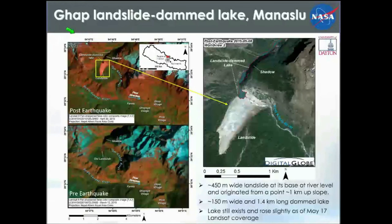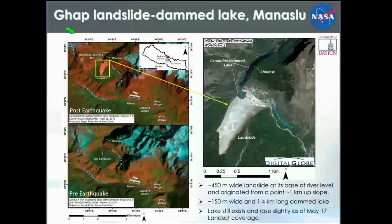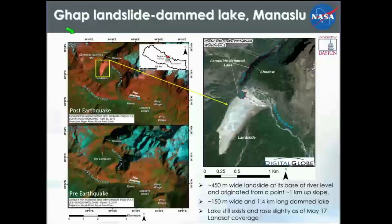Another example is the Gop landslide that dammed a lake in Nepal. On the right, a WorldView image shows the dammed lake and the major landslide in white. The pre- and post-images on the left reveal an old landslide scarp that was reactivated, causing the river to be dammed. Through different remote sensing sources, we can uncover not only what has happened, but cascading hazards — such as remobilization of debris when another event like a major rainstorm occurs.